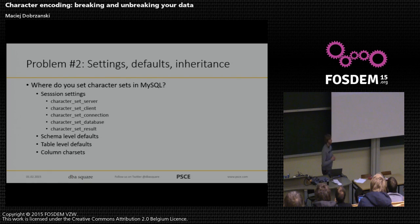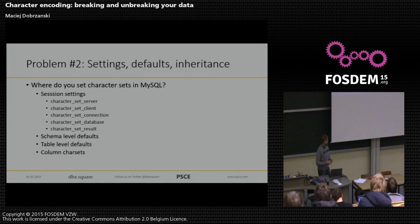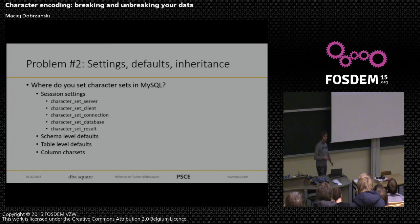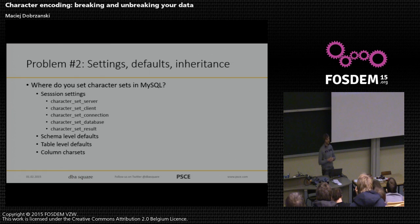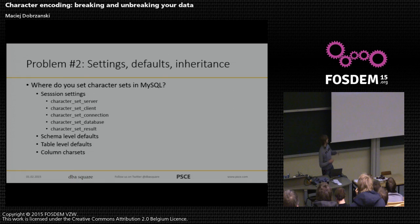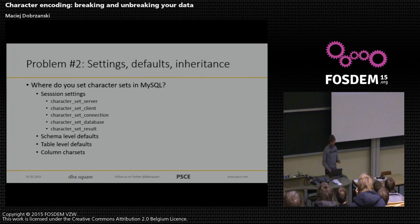Moving to problem number two: encoding and character sets are handled on multiple levels. In MySQL alone, you'll have five different settings to define what's going on with data — how it's translated, encoded, and converted. You also have schema-level defaults, table-level defaults, and column character sets, which define the actual storage character set.